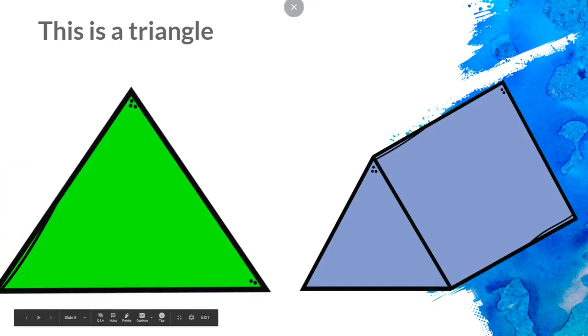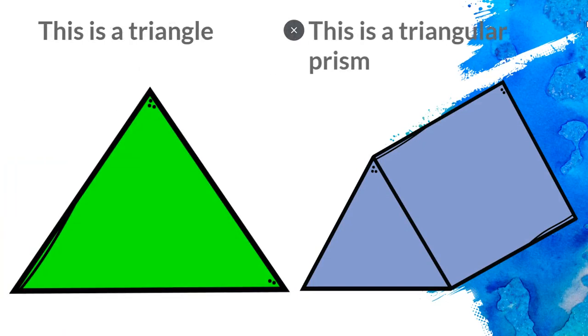This is a triangle. And this is a triangular prism. And you see how the triangle is flat? The triangular prism has a flat triangle in the front. But then it stands up tall.